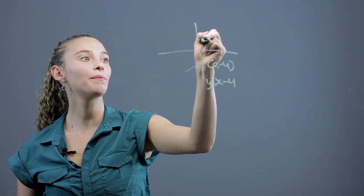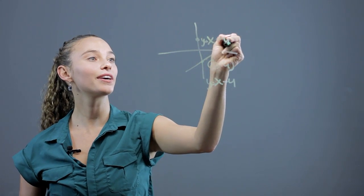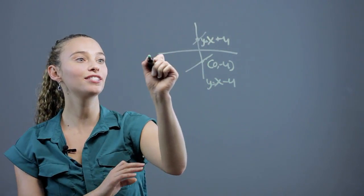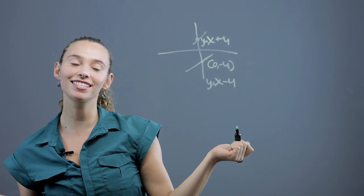So now it'll be y equals x plus 4 and it's just folded over on itself and we just translated it horizontally over the x-axis.